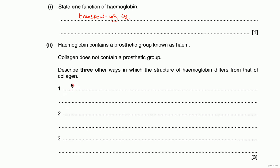The first thing to say is that hemoglobin is globular and it's soluble — that's why it's globular. The other point is that it has four polypeptide chains, whereas collagen of course has three.